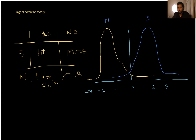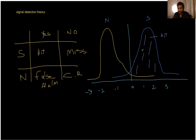If you go by area — anything under the signal curve that is larger than your criterion, it's going to be a hit. So anything underneath the signal normal distribution that is larger than your criterion — there was actually a signal and you detect it — it's a hit. Anything that is lower than your criterion and lies underneath the noise normal distribution is going to be a correct rejection.